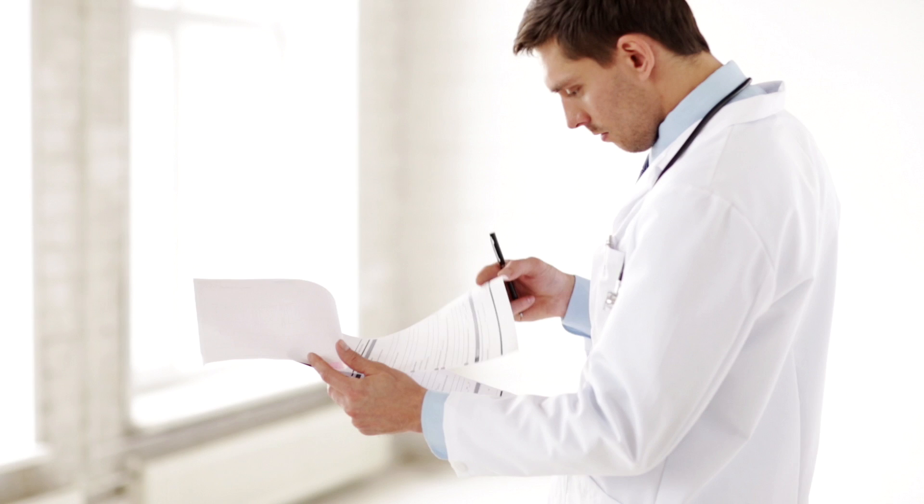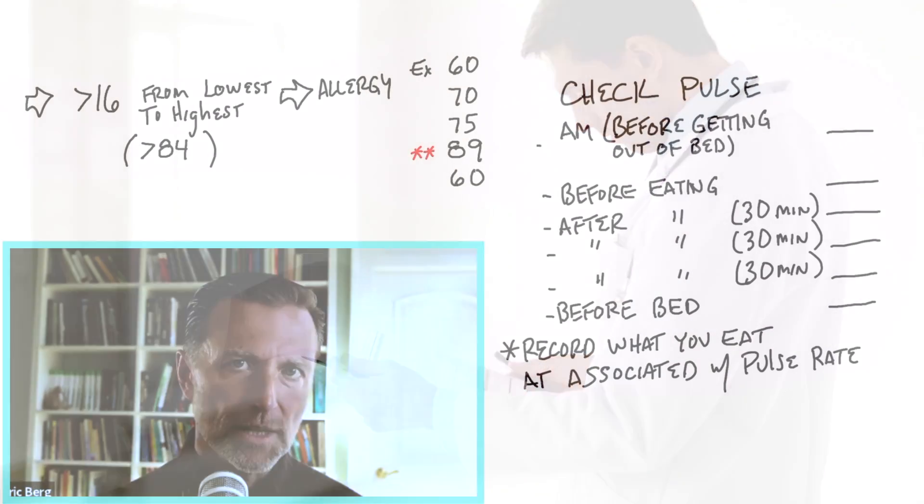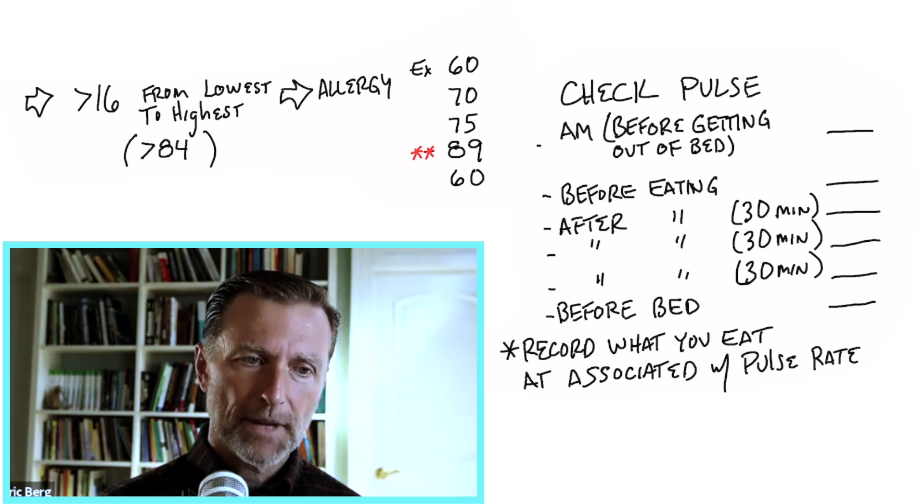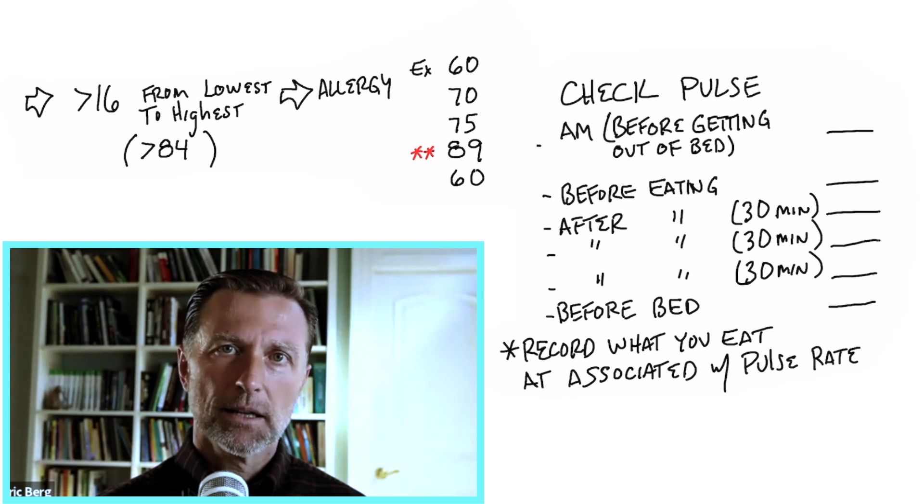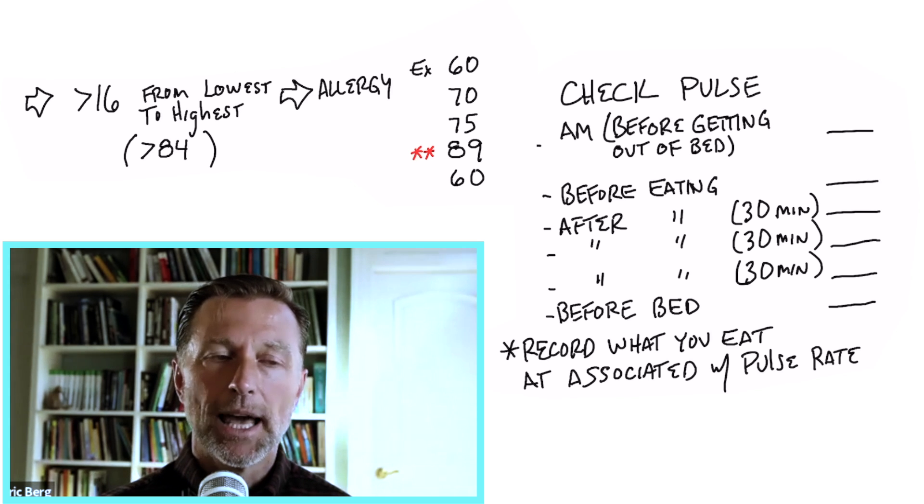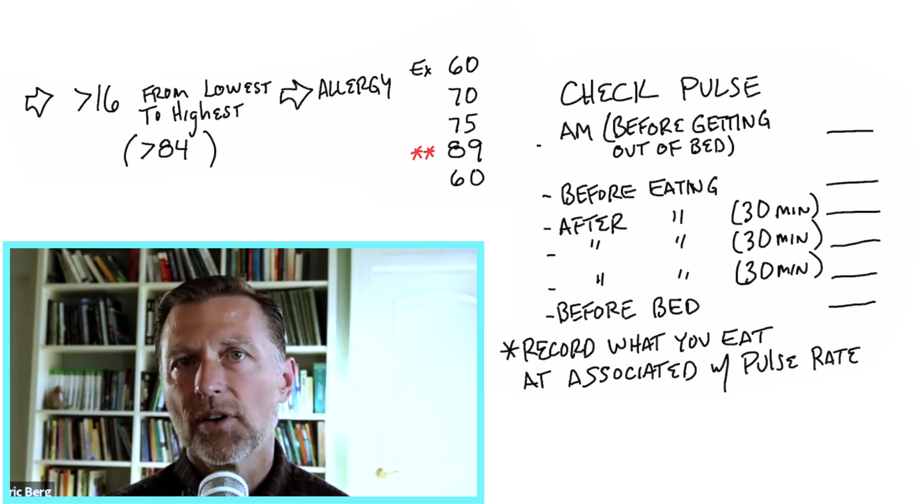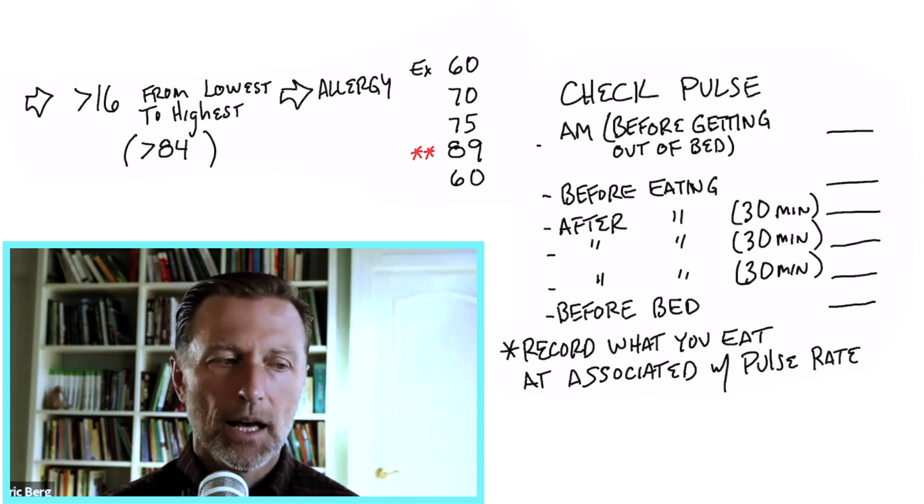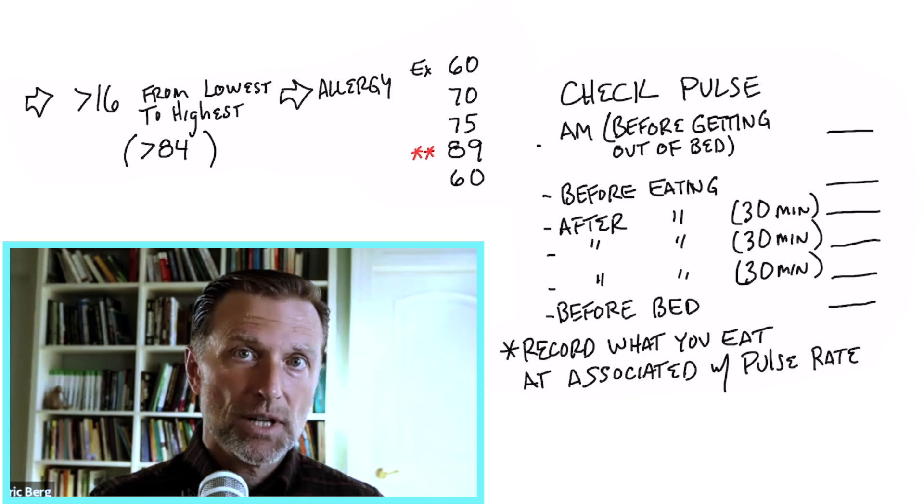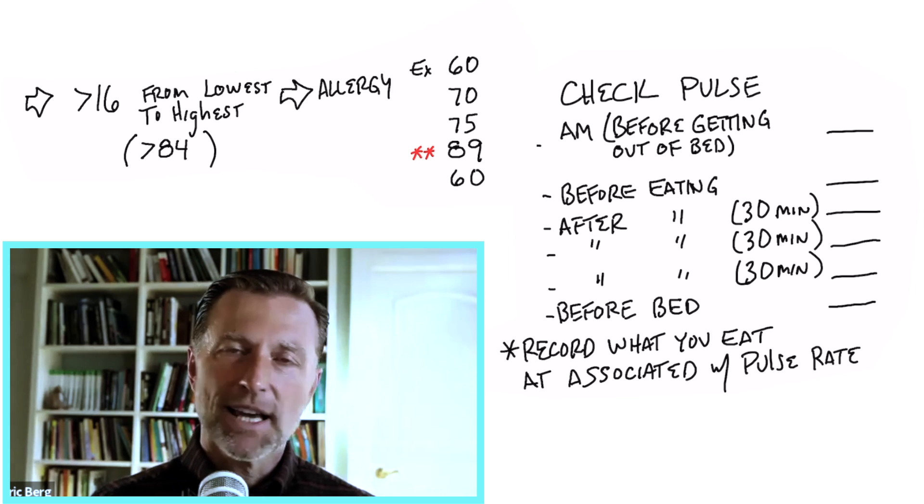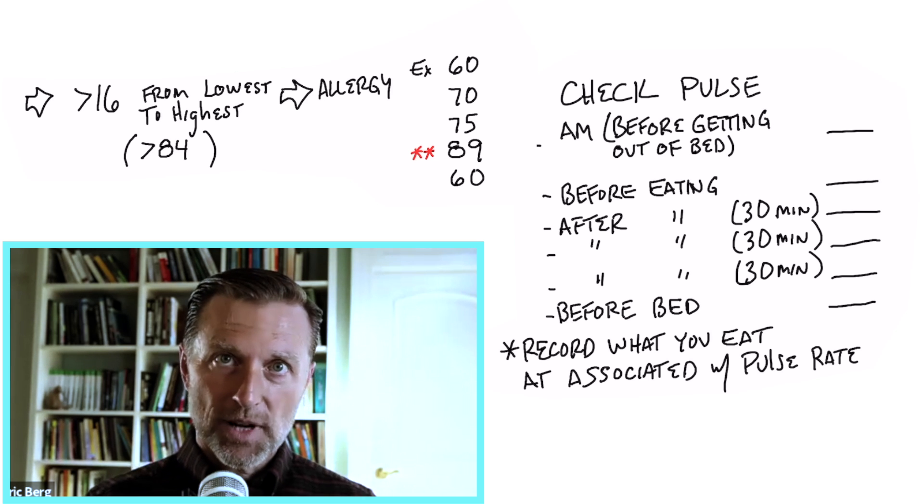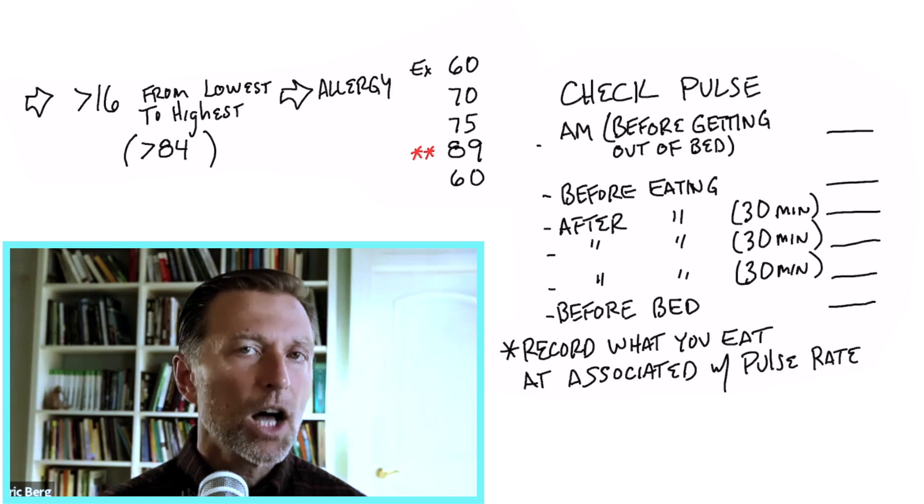Now, Dr. Coco observed that usually you'll have an allergy if there is a difference between the low pulse rate and the higher pulse rate above 16 points. Now, he also mentioned that it usually has to be above 84 as far as a pulse rate. And if you have a lower reading than that, chances are it's not an allergy. It could be something else. It could be stress in your digestive system of what you ate. You're not able to digest it, or it's creating some other stress. Maybe it's some junk food that creates some stress, but it's not an allergy. It's just something your body doesn't tolerate.